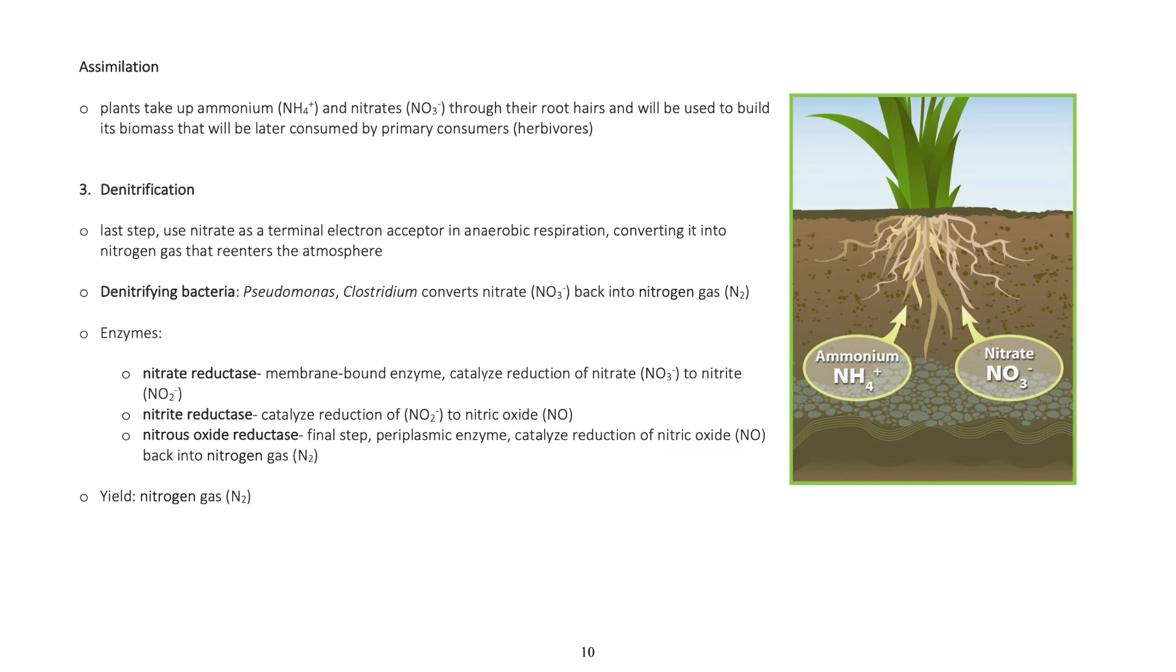Assimilation: Plants take up ammonium and nitrates through their root hairs and will be used to build its biomass that will be later consumed by primary consumers (herbivores).